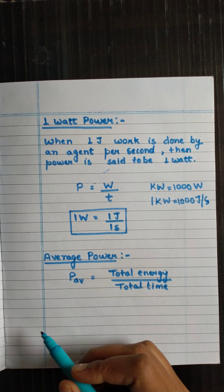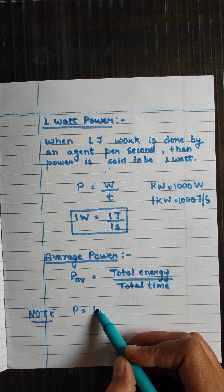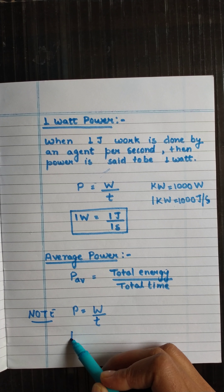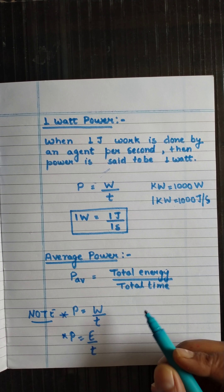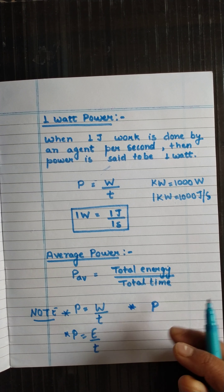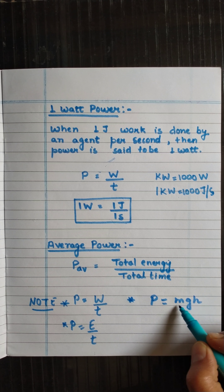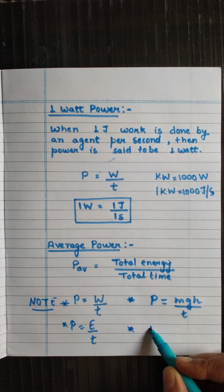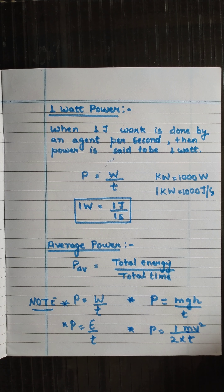To summarize, power equals work upon time. Second formula: power equals energy upon time. If energy type is specified, then if potential energy is given, power equals mgh upon time. If kinetic energy is given, power equals half mv squared upon time. These are the different formulas of power.